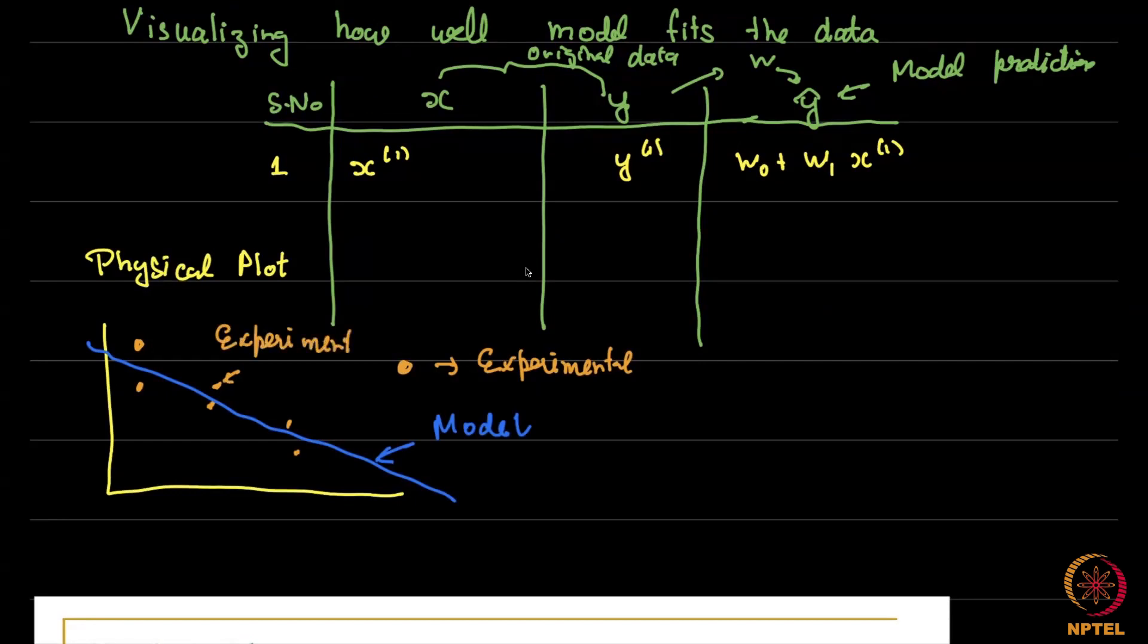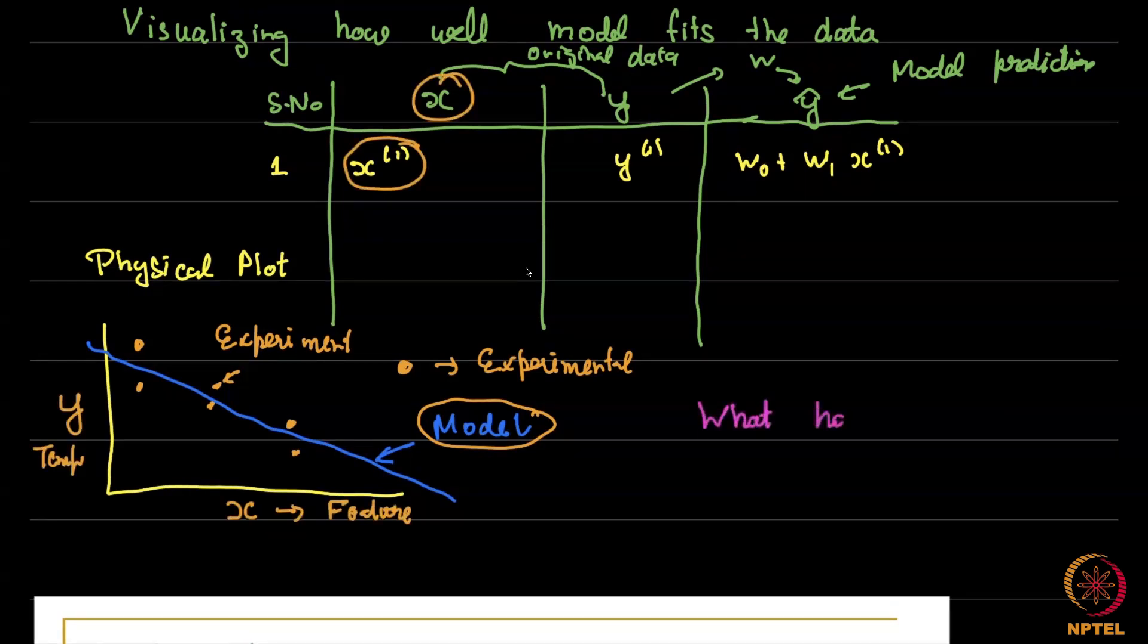So visually, the only way for us to see how well something does is to compare how close this model line looks to the experimental data. We also had a numerical measure, which is our goodness of fit for this. But if we start here, notice what is there on the x and y axis. On the x axis is what I will call the feature, in this case just x, a single variable. And on the y axis is whatever we are plotting against, for example in the case of thermocouples, this could be the temperature.